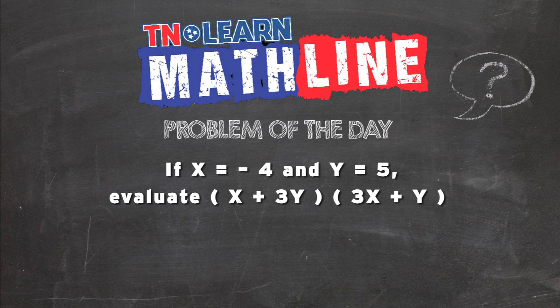If x equals negative 4 and y equals 5, we're going to evaluate. That means get an answer. x plus 3y, that's in one parenthesis, and 3x plus y in the other parenthesis.